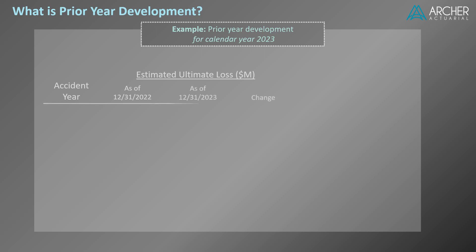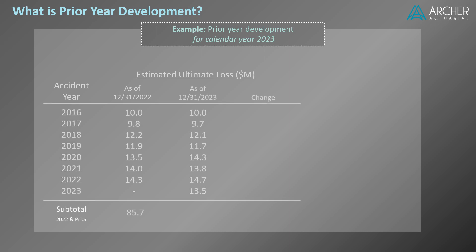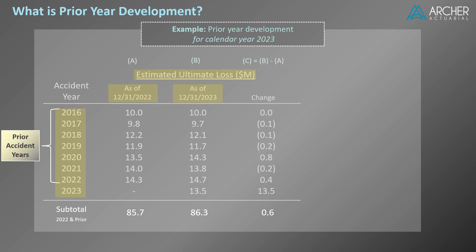Let's expand our prior year development example for calendar year 2023 to include amounts by accident year. We have estimates of ultimate loss as of 12-31-2022 and 12-31-2023. We'll assume that the insurance program under review began in 2016, so as of year-end 2023 we have accident years from 2016 through 2023. Since we're looking for prior year development in calendar year 2023, accident years before 2023 are considered prior accident years, while accident year 2023 is considered the current accident year.